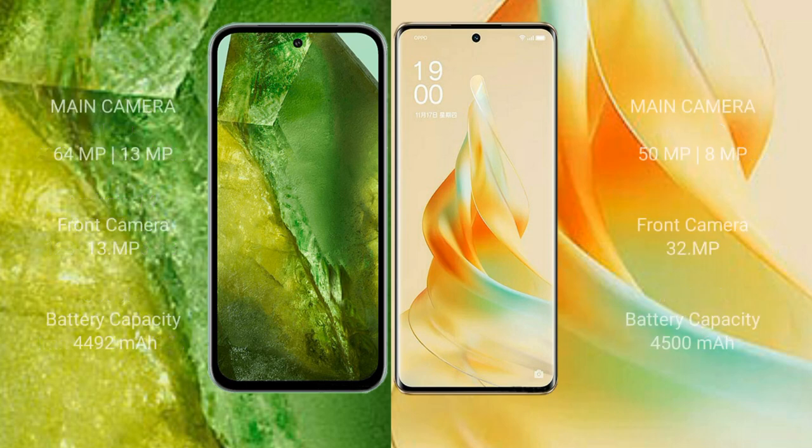Google Pixel 8a features a dual rear camera setup: 64MP plus 13MP, and a 13MP front camera. OPPO Reno 9 Pro features a dual rear camera setup: 50MP plus 8MP, and a 32MP front camera.